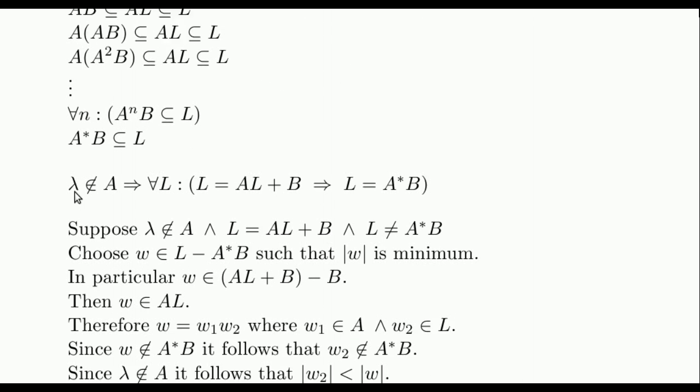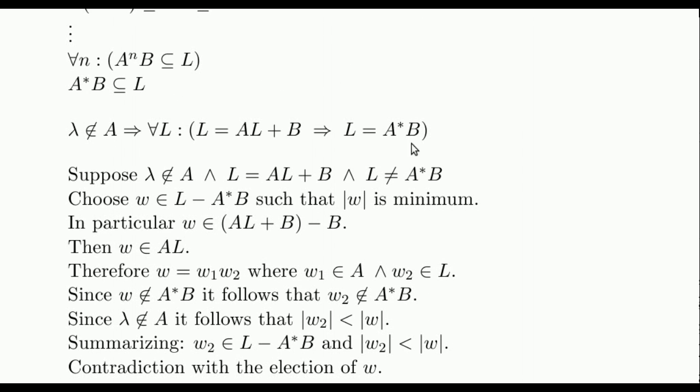Finally, we justify that, in the case where A does not contain the empty word, it follows that A star B is the only solution to the equation. We proceed by contradiction. Suppose that there exists a solution L different from A star B. Since any solution of the equation contains A star B, in order to make L and A star B different, there must exist a word of L that is not in A star B. We choose w as the word with minimum length satisfying this condition. By definition, w is in L, and since B is included in A star B, it follows that w is also not in this other set, but then w must be in AL. Therefore, w can be constructed as a concatenation of a word w1 in A and a word w2 in L.